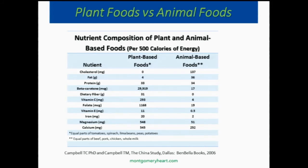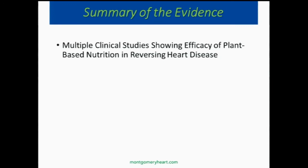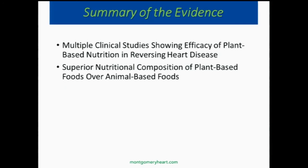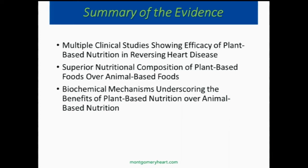If you look at all the other nutrients — protein is about equal — but all the phytonutrients, which are the cancer-fighting nutrients that help with cell repair, are superior in plant foods compared to animal foods. In summary, multiple clinical studies show plant-based nutrition reversing heart disease. The composition of plant foods is superior to animal foods, which probably explains this, along with the biochemical mechanism underscoring why plant foods contribute to improvement of cardiovascular disease.